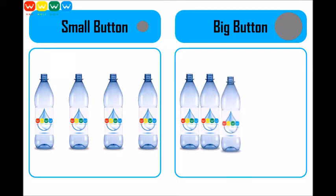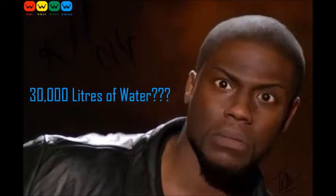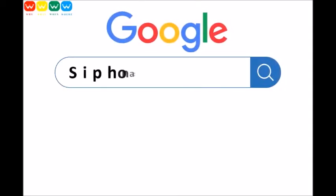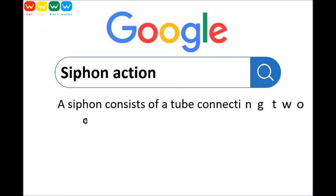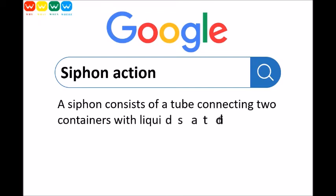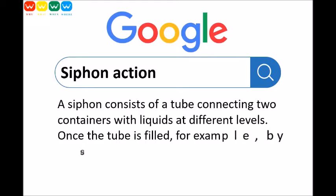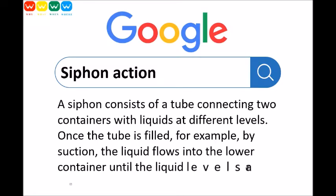Are you aware that the new dual flush system helps us save 30,000 liters of water per year? This is basically due to something called the siphon action. The definition for siphon action will be added in the description below.